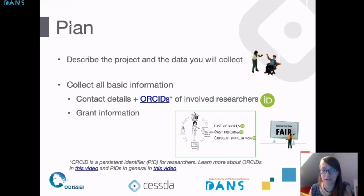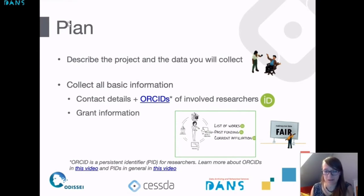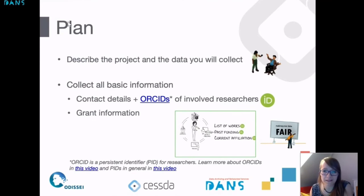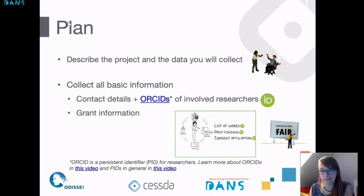An ORCID is an ID for researchers meant to be persistent and to make it possible to identify you uniquely. Some people might have a very common name, and then it's really difficult to know whether a certain research paper is by you or by somebody else. By using an ORCID — which is a persistent identifier for a person — and providing this information to your funding agency and journal, we can then link information much more easily and automated. This will help us find information relevant to your project and reduce the administrative burden for a researcher.